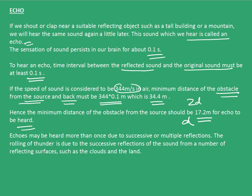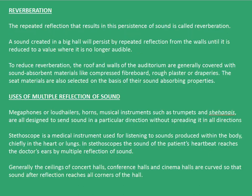Echoes may be heard more than once due to successive or multiple reflections. The rolling of thunder is due to the successive reflections of the sound from a number of reflective surfaces such as clouds and the land. Now similar to echo, we have something called reverberation. The repeated reflection that results in the persistence of sound is called reverberation.